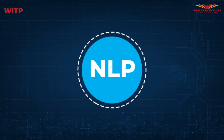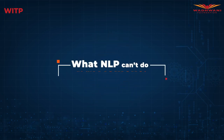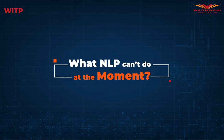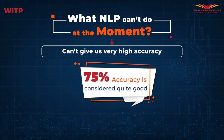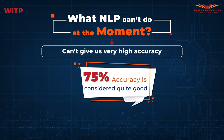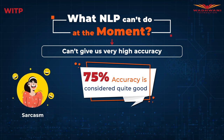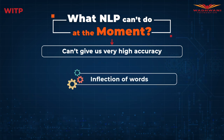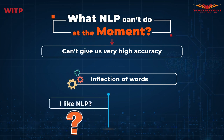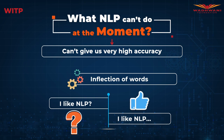Now let's understand what NLP cannot do at the moment. NLP cannot yet give us very high accuracy on tasks — even 75% accuracy is considered quite good. One reason for this is that languages have complex attributes such as sarcasm, irony, idioms, and many more. Even the inflection of words can change the meaning of a sentence — for example, 'I like NLP' and 'I like NLP' can have two very different meanings depending on emphasis.